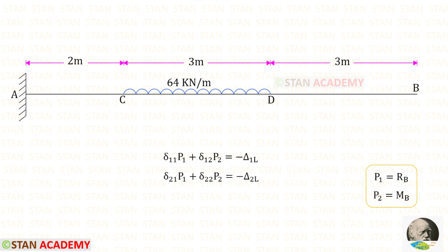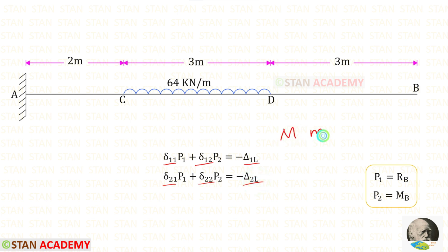In these two equations, P1 is RB and P2 is MB. We have to find the displacements delta 11, delta 12, delta 21, delta 22, delta 1L, and delta 2L. For that we have to find the moments M, M1, and M2.